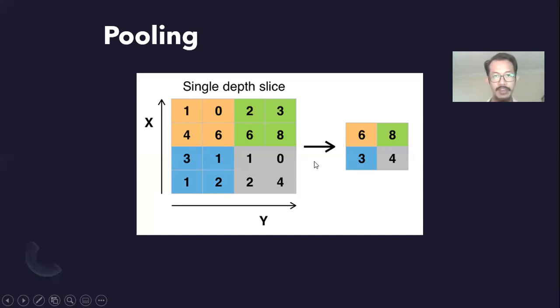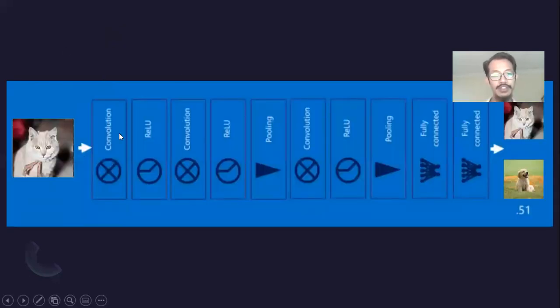By arranging the convolutions and this activation, this rectified linear unit, and pooling in different combinations, we're able to create a network that is able to detect an object and recognize things like this cat right here.